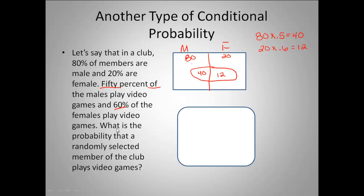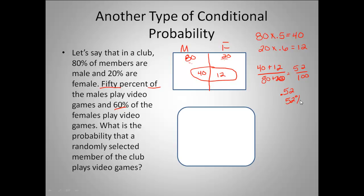From this diagram we can figure out our answer. What is the probability that a randomly selected member plays video games? I need the total number of people that play video games, so I take 40 plus 12 and divide by the total number of members — 100. That gives me 52 out of 100, which is 0.52, or 52%.